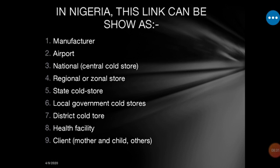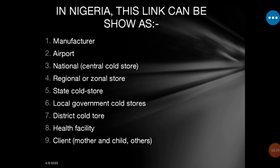The cold chain system links from up to down, from high ranking to lower. In Nigeria, the chain starts from the manufacturer — the company which manufactured those vaccines — to the airport, where those vaccines will be taken before transporting into Nigeria, then to the national store in Abuja.